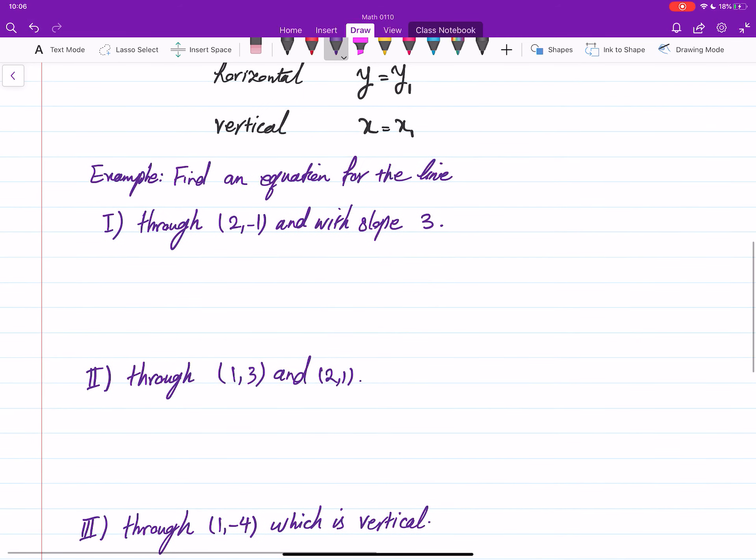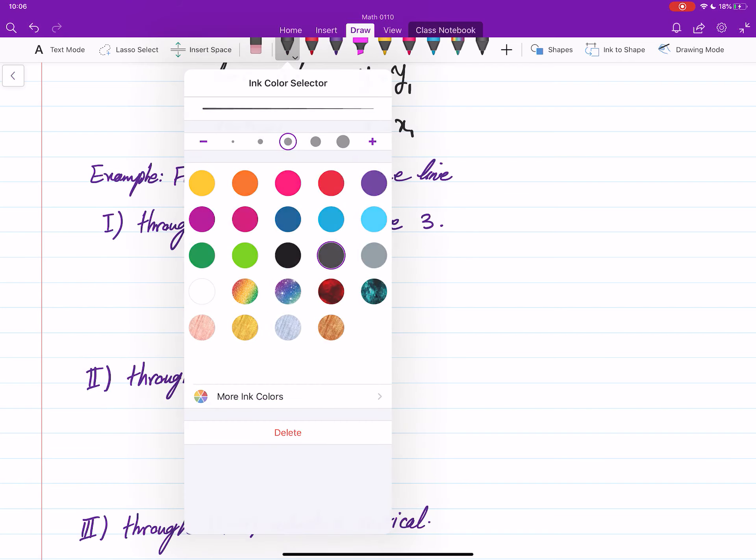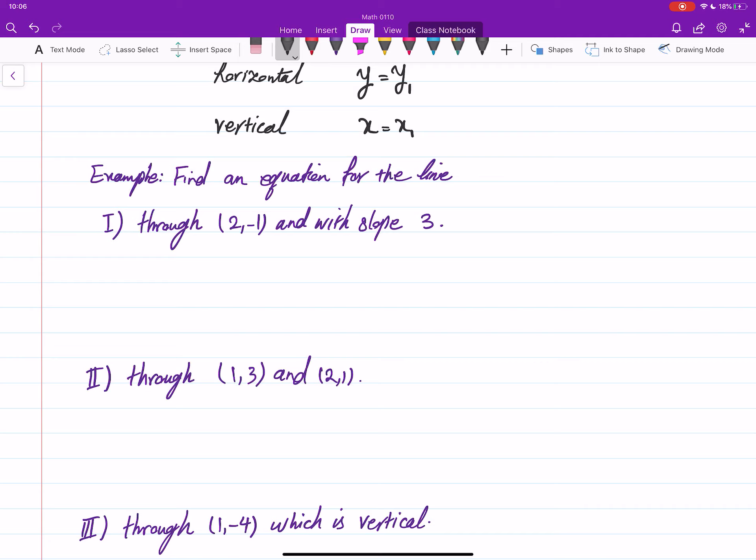Let's go through these one by one. First one, everything is given. This is m, this is x₁, this is y₁. So we have y minus y₁ equals m times (x minus x₁). From this we get y minus (-1) equals 3 times (x minus 2). Then simplify: y plus 1 equals 3x minus 6. Take the 1 to the other side, so it will be 3x minus 6 minus 1. And finally, we got y equals 3x minus 7. So this is the equation.